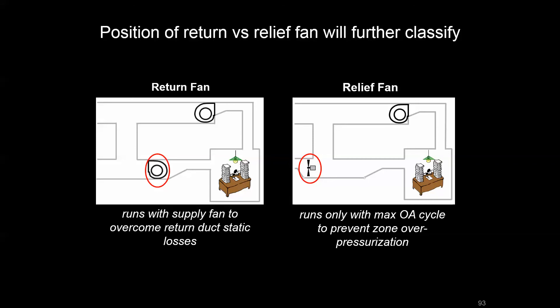The relief fan deals with over-pressurization differently. It's on the other side of the recirculation duct and may run intermittently with a cooling mode, or off a space pressure sensor that tells the relief fan when to operate.